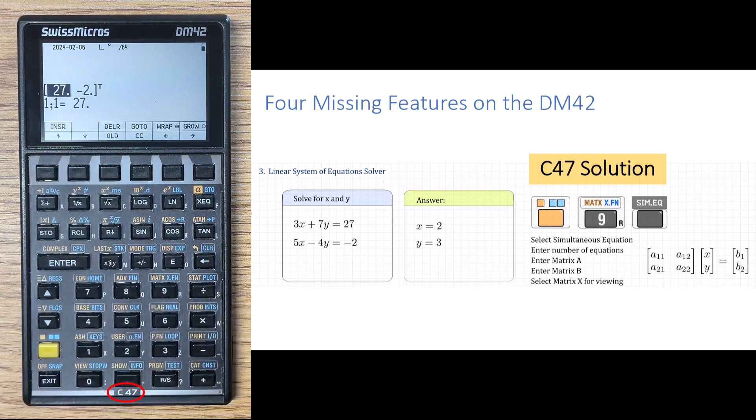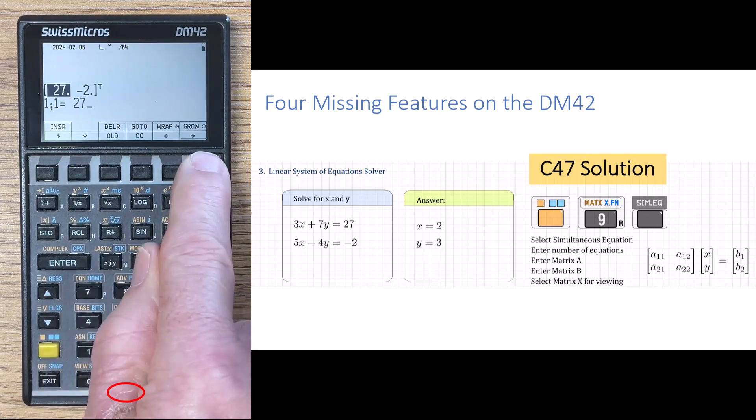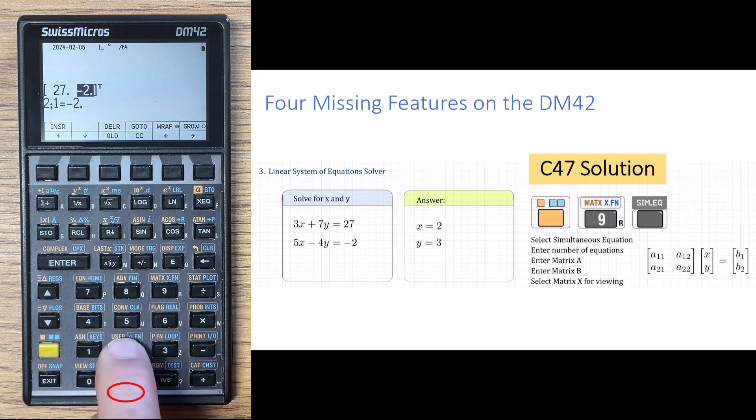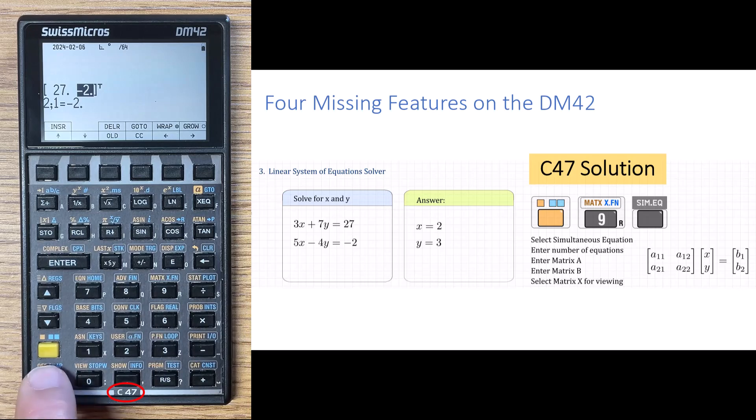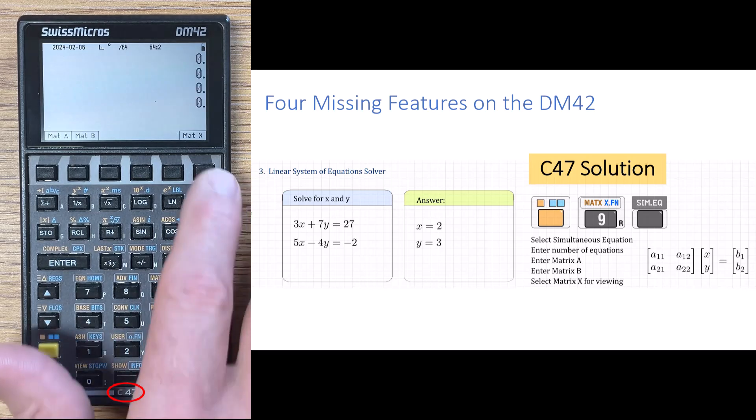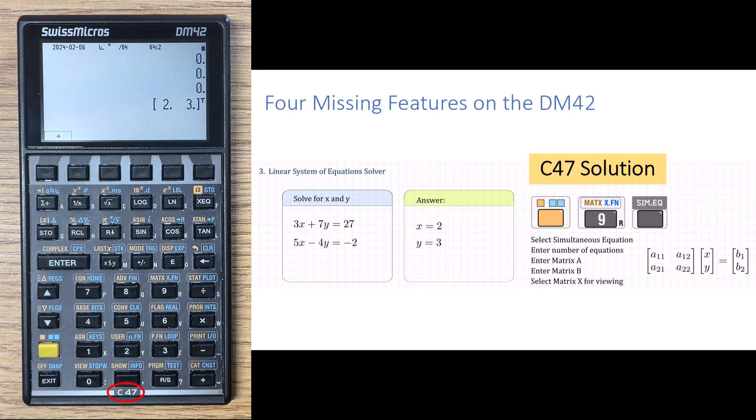So matrix A is entered this way, and then matrix B, again, it's already been entered in there. So 27, right arrow, and then 2, change sign, enter, right arrow, whatever we like, and then exit. And then we select matrix X, and this gives us the answer. So 2 and 3 are the answers for X and Y.